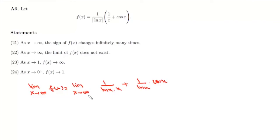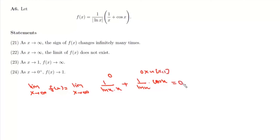When x tends to infinity, log x tends to infinity, so the first term is 1/infinity which is 0. The second term is also 1/infinity times cos x — since cos x oscillates between -1 and 1, this product is 0. So the limit exists and equals 0. Therefore Statement 22 — that the limit of f(x) does not exist as x tends to infinity — is incorrect.